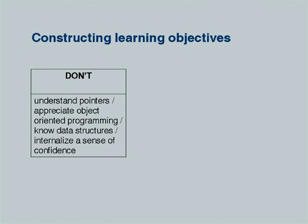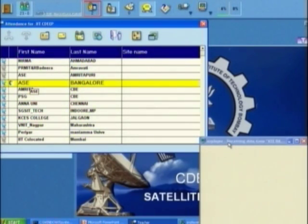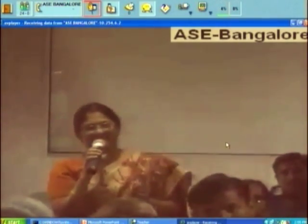Learning objectives indicate a specific performance outcome of the learner. Here are some which are NOT learning objectives: 'understanding pointers,' 'appreciating object-oriented programming,' 'knowing data structures.' We claim these are not learning objectives. Why? Dr. Sangeeta from AAC Bangalore points out that these are not well-defined and not measurable — and that is one reason why they do not qualify as learning objectives.